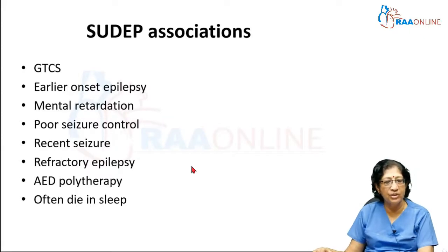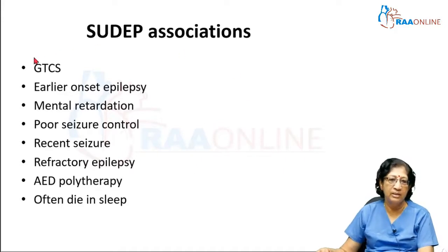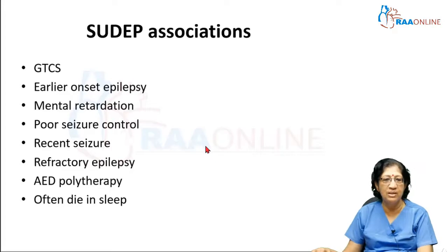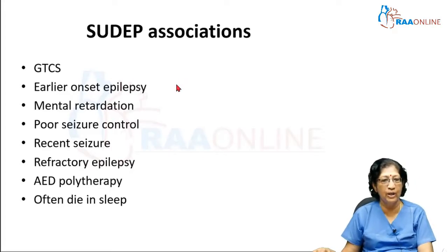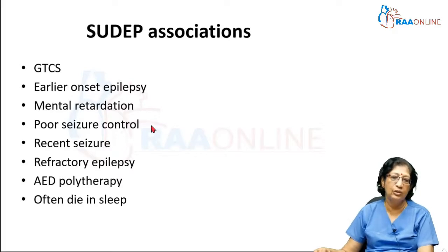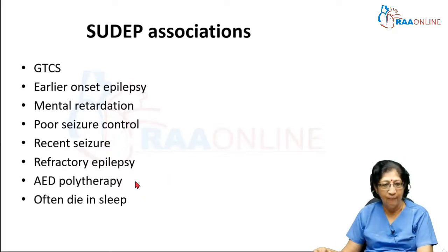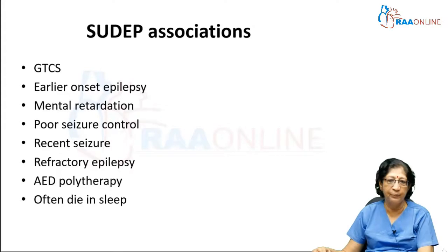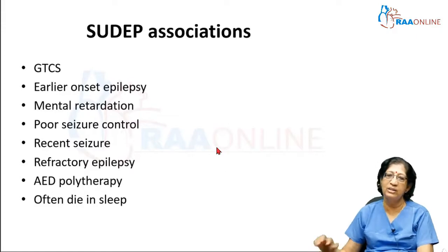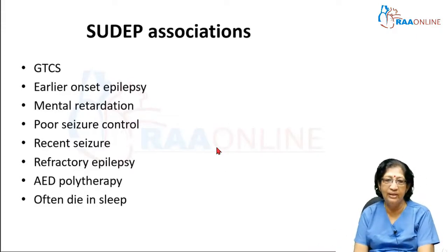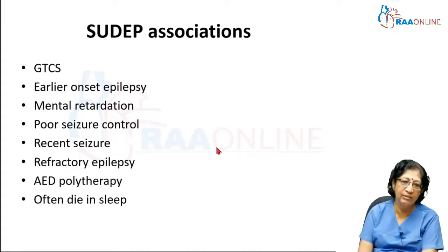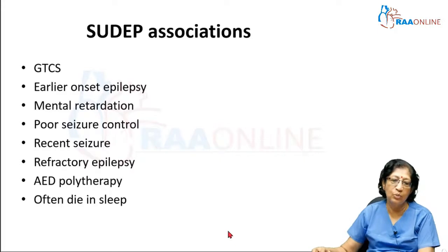There are certain associations which help us predict whether a patient is at greater risk for SUDEP: generalized tonic-clonic seizures more than partial ones, earlier onset of epilepsy, longer duration of epilepsy, more refractory epilepsy, poor seizure control, patients on multiple anti-epileptic drugs, and associated mental retardation. Many of them also die in sleep. So, for a patient who has generalized tonic-clonic seizures of many years duration with some mental retardation and very difficult-to-control seizures even with three or four drugs, you should warn the family and carer about the risk of SUDEP.